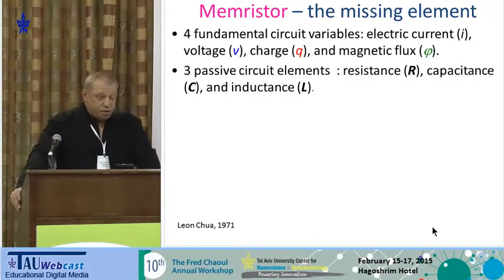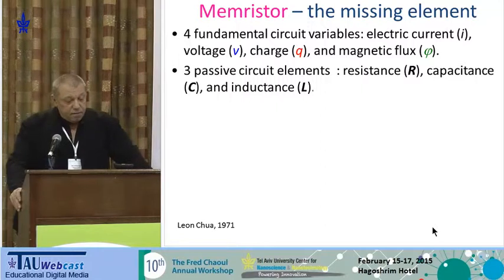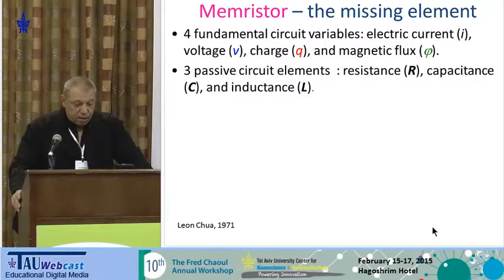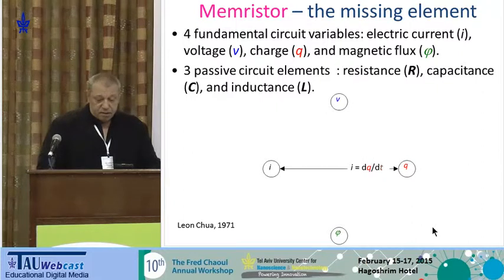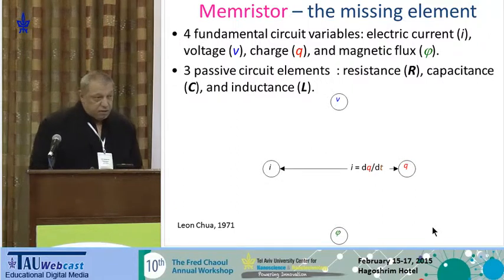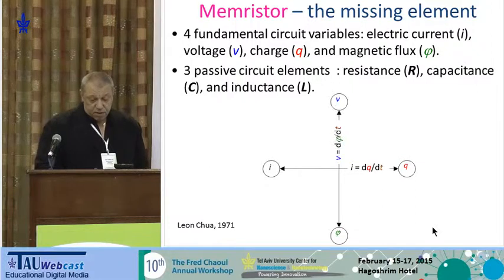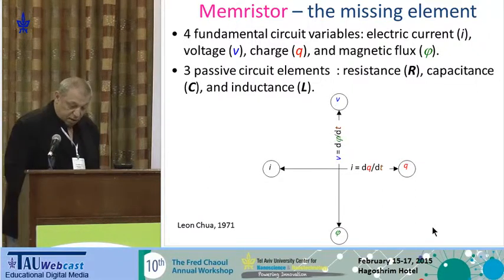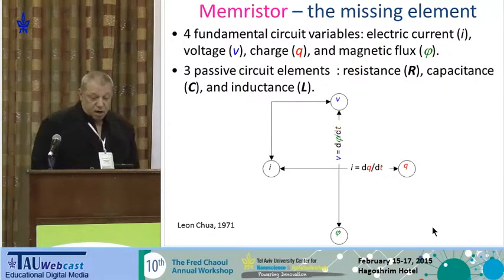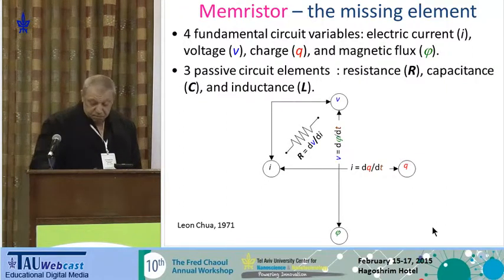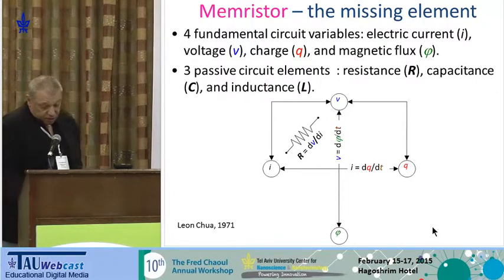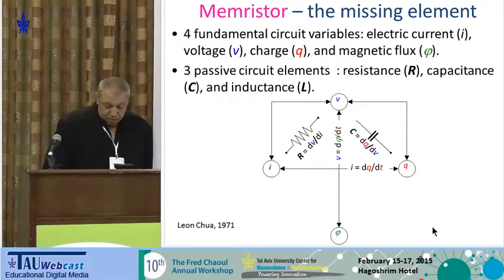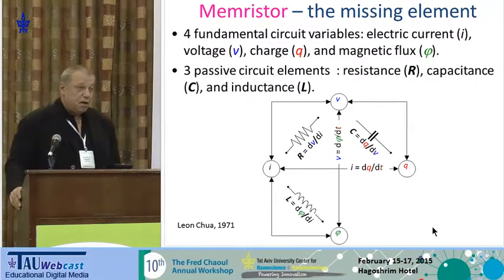Let me introduce what a Memristor is. We all know the four fundamental circuit variables: electric current, voltage, charge, and magnetic flux. These give us three passive circuit elements — resistance, capacitance, and inductance. Current is the derivative of charge with respect to time, and voltage is the derivative of magnetic flux with respect to time. Resistance relates current and voltage, capacitance relates voltage and charge, and inductance relates magnetic flux and current.